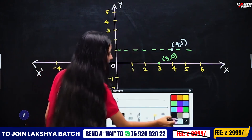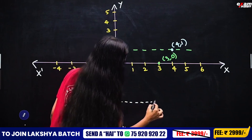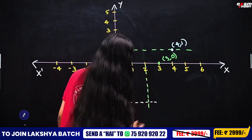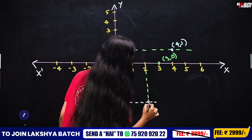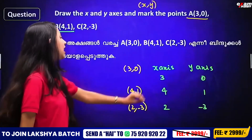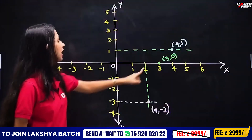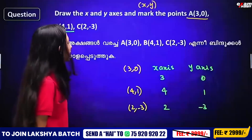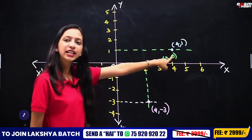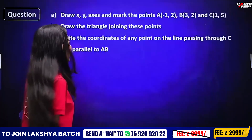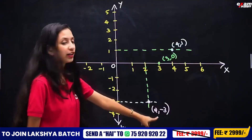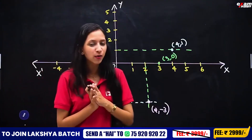For point C, minus 3 is like this. So we have (2, minus 3), which is the point. We move 2 units on the x-axis and minus 3 units on the y-axis. We have 3 points: (3, 0), (4, 1), and (2, minus 3). It is very easy — we have 3 points to mark.